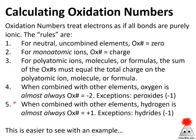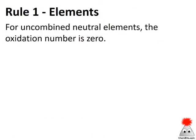Rules four and five cover some typical cases. Except when combined with other elements, oxygen is almost always minus two — except for peroxides. And hydrogen is almost always plus one — except for hydrides.